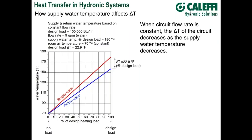How does supply water temperature affect delta T? Let's say we're changing supply water temperature based on heating load. At design condition — 100% heat output — we have a supply water temperature of 180°F. As we go to smaller percentages of design load, like half load, our supply water temperature can go down. This assumes constant flow rate and not varying the flow rate. Obviously, if we only need half as much heat transfer, we can do it with half the delta T we had under design conditions.